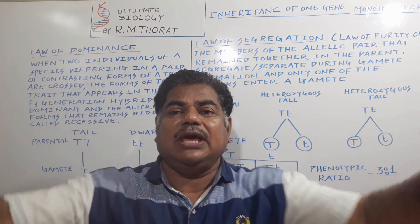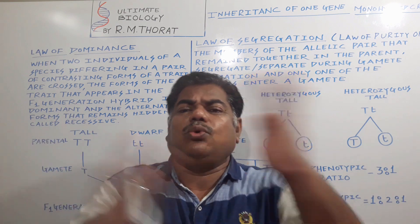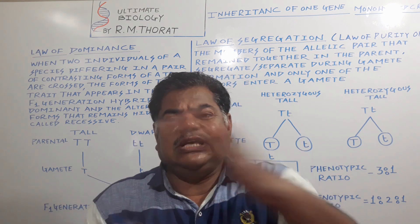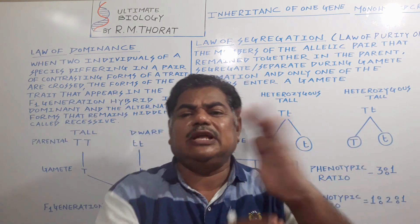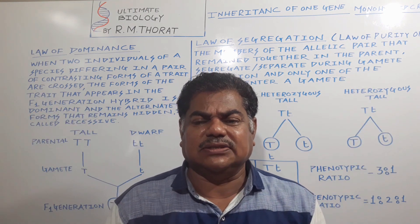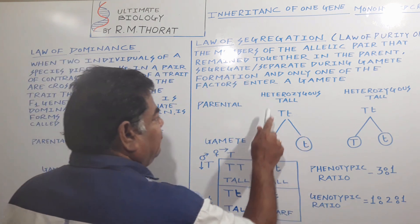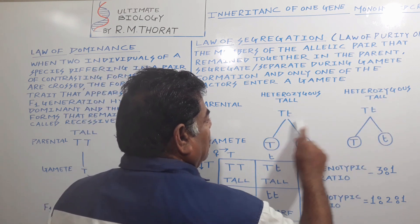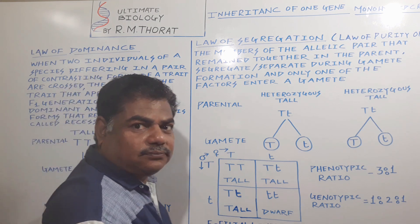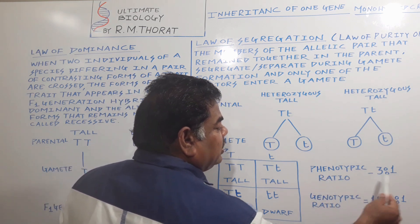Mendel developed a plot and let all the plants inside that plot self-pollinate by natural method — selfing. Some plants self-pollinated, some cross-pollinated by natural method. And they got a result. When they crossed heterozygous tall with heterozygous tall, in the F2 generation the phenotypic ratio came to 3 to 1.